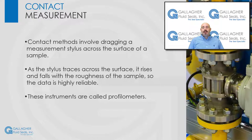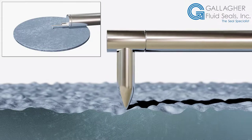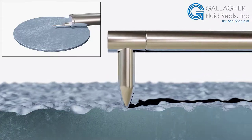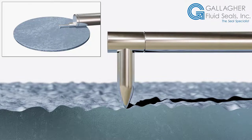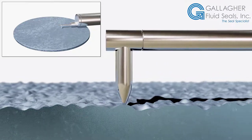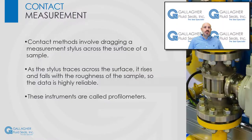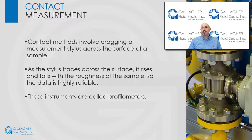Next, let's discuss contact measurement. Contact methods involve dragging a stylus tip across the surface of a sample. As the stylus traces across the surface, it rises and falls with the surface roughness, so the data is highly reliable. These instruments are called profilometers. When using a contact profilometer, it is highly recommended to drag the stylus axially across the surface, and not radially.